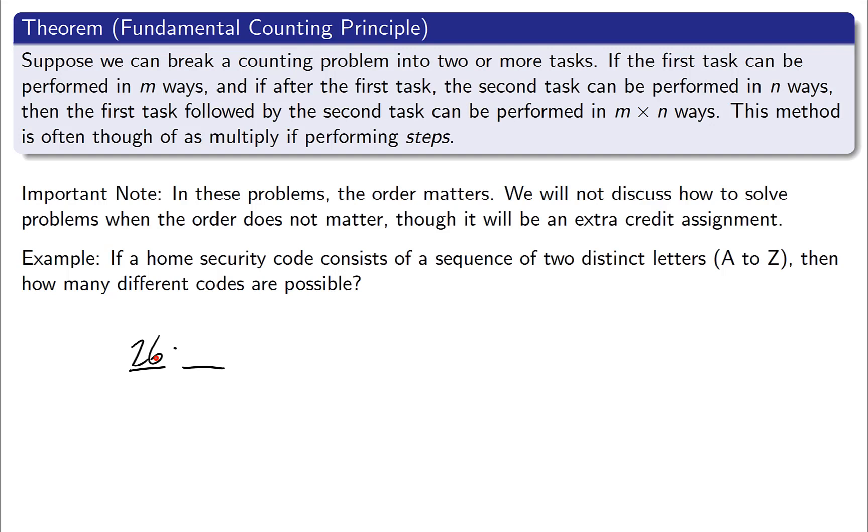Now, how many choices do you have for your second letter? If you're saying 26, you're close, but you missed a key word in this problem. This is a word that you should keep looking for. If you see any sort of indication that you have to use a different one from your first choice, where in some way repeats are not allowed, then instead of 26 possibilities here, I have to choose a letter that's different from the one that I chose before. That gives me only 25 possibilities. When I do that, I get 650 codes. This is the idea of what do you do when you have some sort of distinctness between your choices.